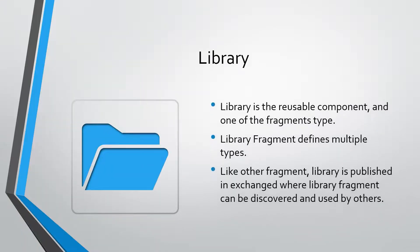Library is one of the fragment types in which we can define multiple types. For example, we can define traits, we can define data types, we can define a combination of traits and data types. We can publish this library to the Exchange and then we can import this library in an API specification project and use the types defined inside the library inside the API specification.